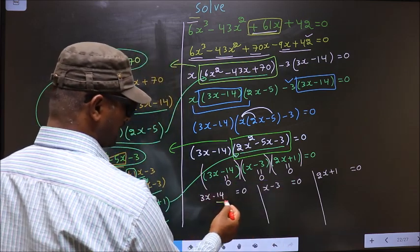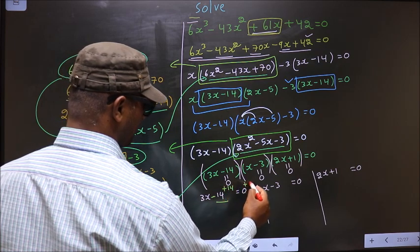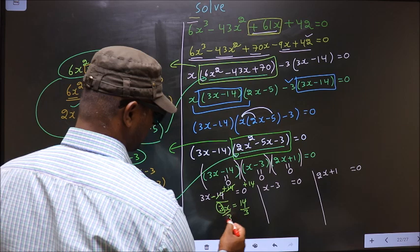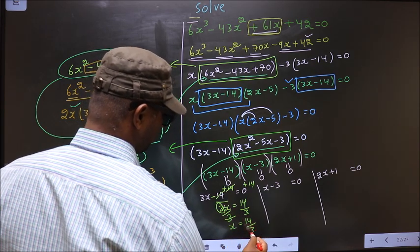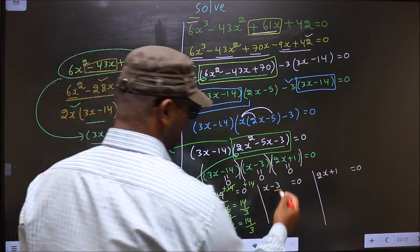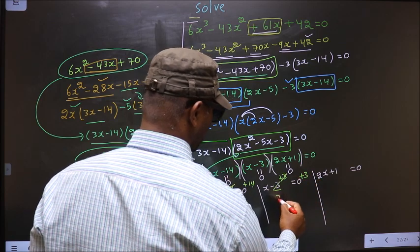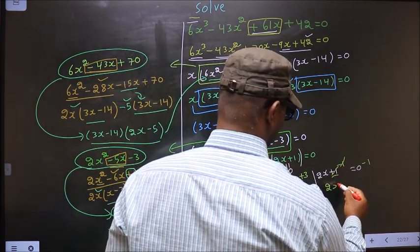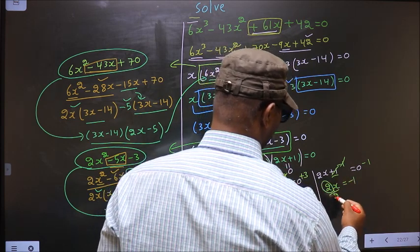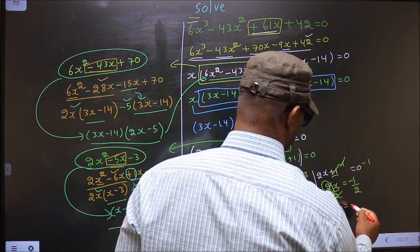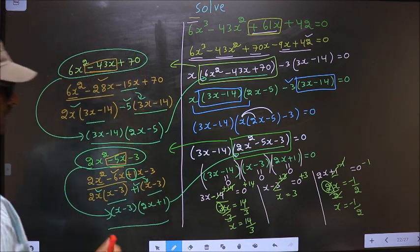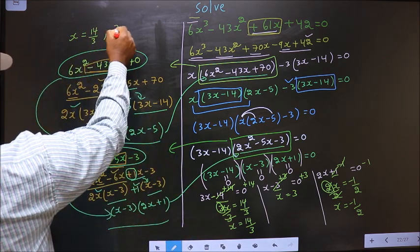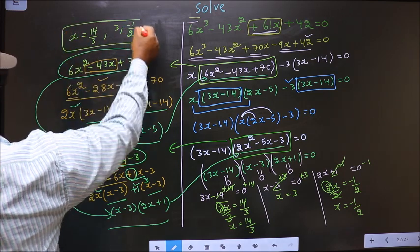To get x from 3x minus 14 equal to 0: add 14, so 3x equal to 14, then divide by 3, giving x equal to 14 by 3. For x minus 3 equal to 0: add 3, so x equal to 3. For 2x plus 1 equal to 0: subtract 1, so 2x equal to minus 1, then divide by 2, giving x equal to minus 1 by 2. So the values we got for x are 14/3, 3, and minus 1/2. This is our answer.